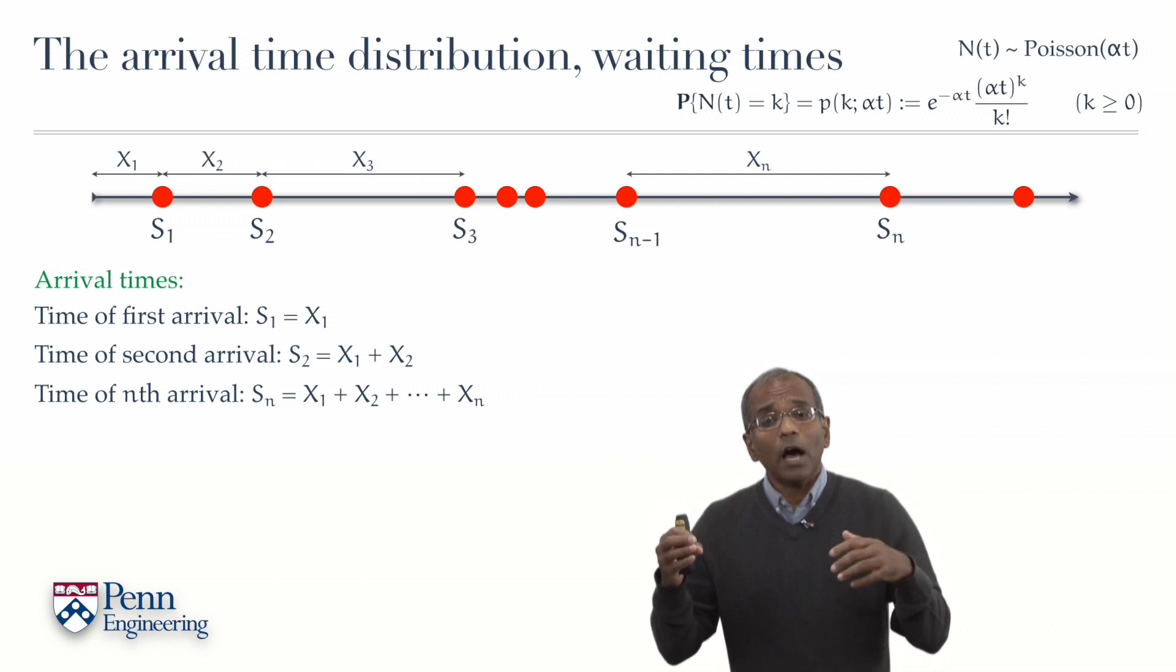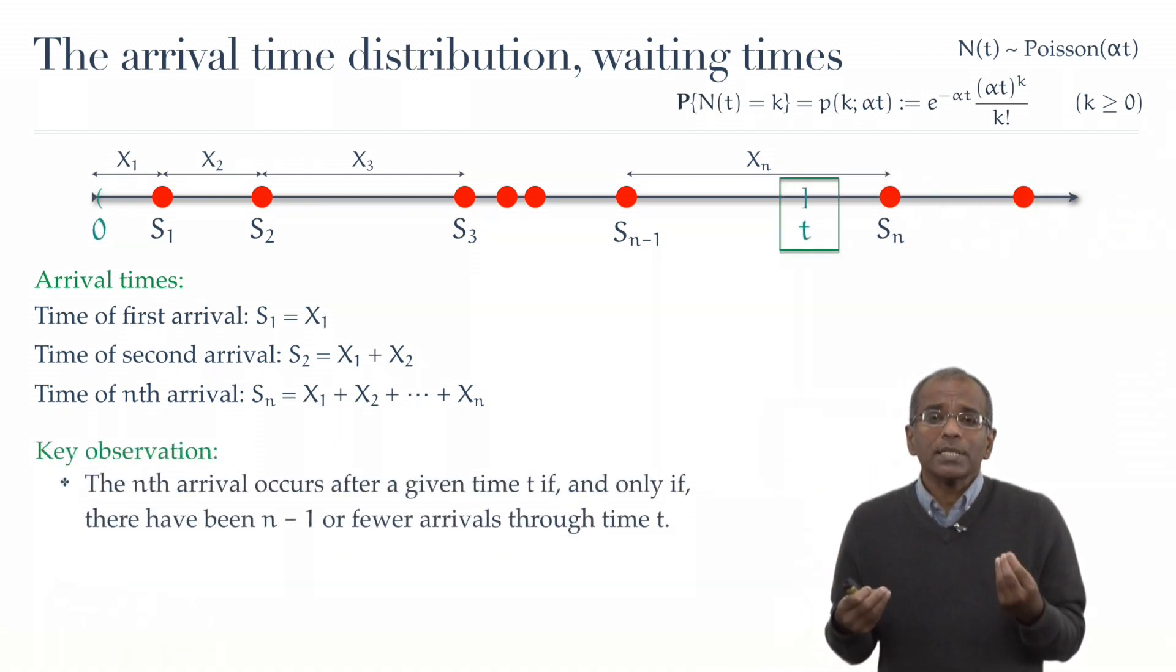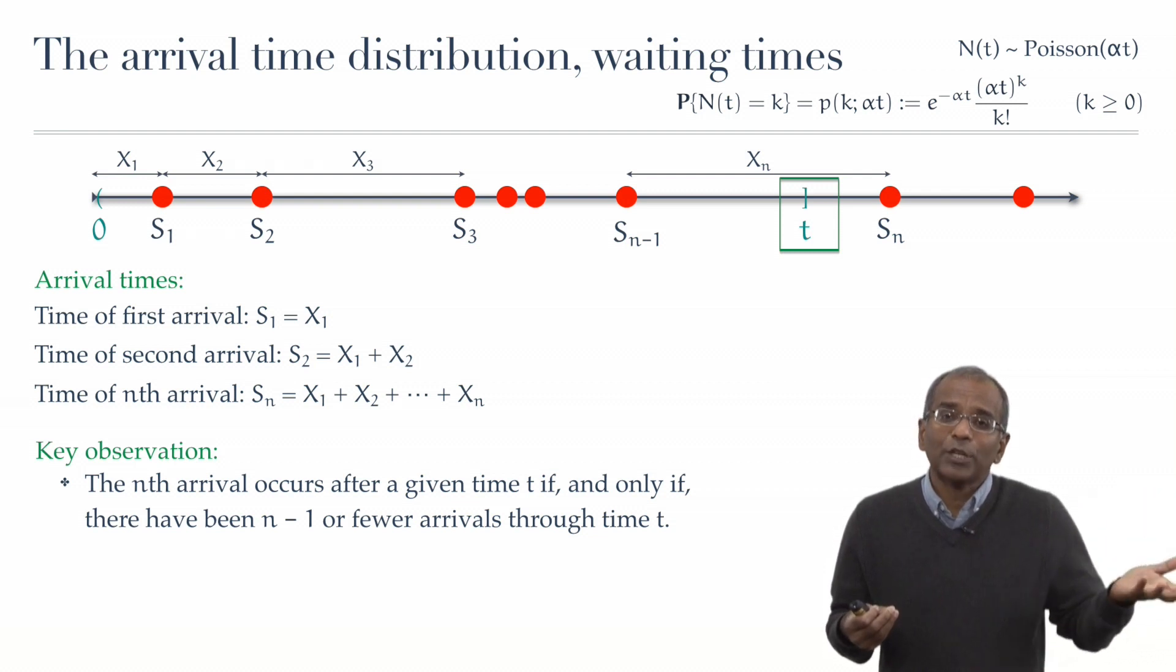Okay, let us take a leaf out of our analysis of a first arrival time. So here is the key observation. When does the waiting time for the nth arrival exceed a given value t?